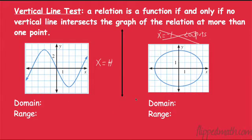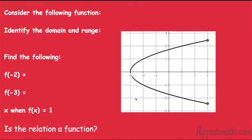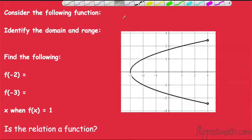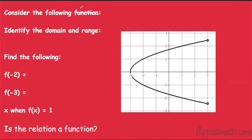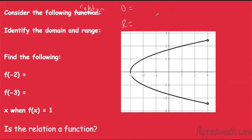Let's come back to domain and range. We have the following relation — we should say relation because we don't know if it's a function yet. Identify the domain and range. Now, do I want to list every single point on this line? No — it would take forever; it's impossible. So here's what we're going to do: we're going to look at our graph and write domain and range in interval notation. Our domain is x, so I want you to focus only on looking left to right.